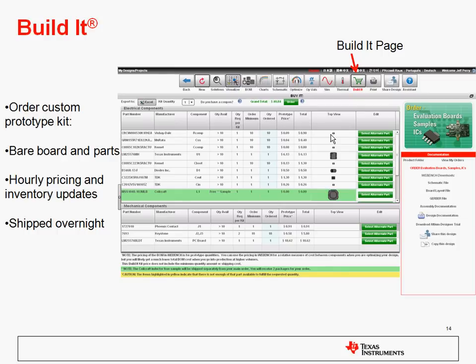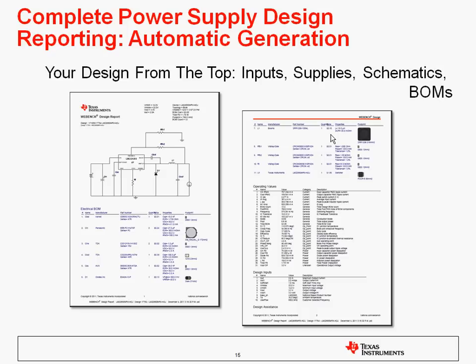We also have the Build It step in WebBench, which you can access using the shopping cart icon in the navigation bar. This allows you to get a custom prototype kit of your exact WebBench design. This includes a bare board and parts, so you will need to solder the kit together, but it allows you to very quickly get a prototype up and running. These are based on hourly pricing and inventory updates from our major distributors. WebBench also has a very nice PDF reporting feature — you get a PDF report of the schematic, the bill of materials, and the operating values, so you can save this to document your power supply design.